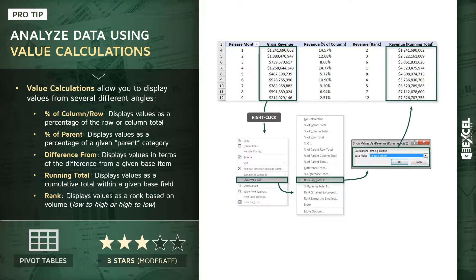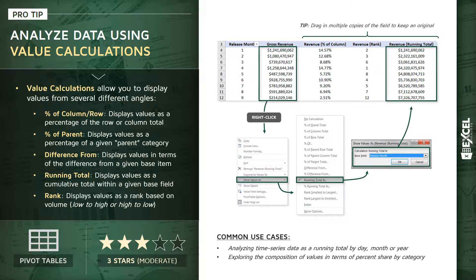A quick tip: I'd recommend dragging in multiple copies of the field you're looking to analyze so that you can keep an original and compare it against these value calculation versions of that field. Also keep in mind you're not actually changing the values themselves — the core underlying raw values are not changing. All we're doing is changing the way those values get displayed within our pivot table, and only within our pivot table.